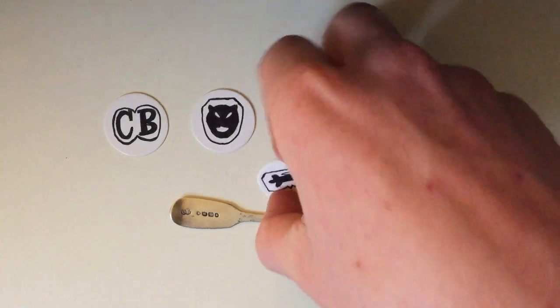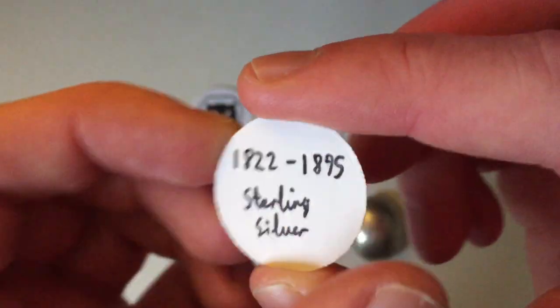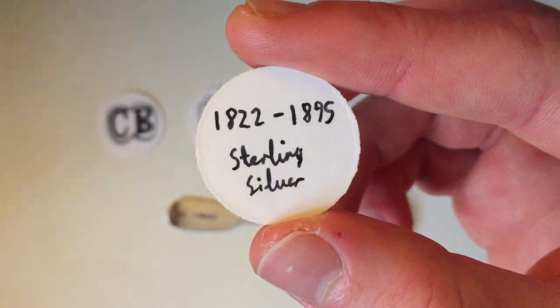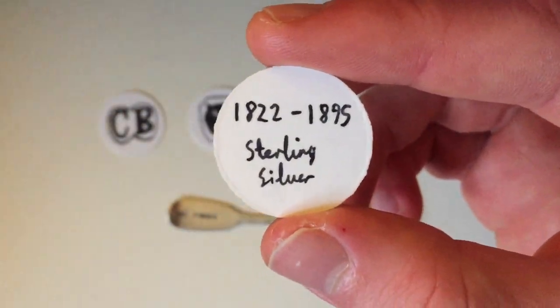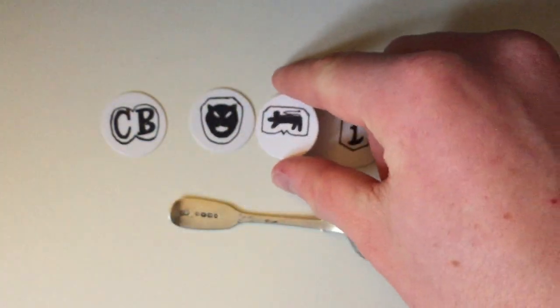Then, we've got the classic sterling silver lion. There we go. Once again, this particular design was used between 1822 and 1895. But, if you see any sort of lion shape on there, it is going to be sterling silver.